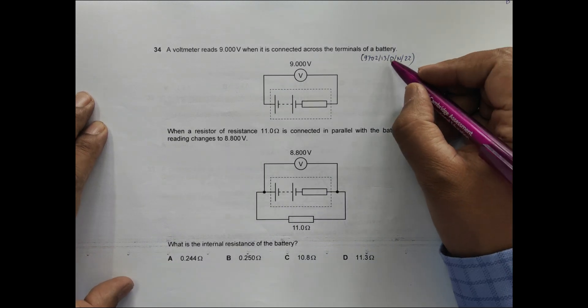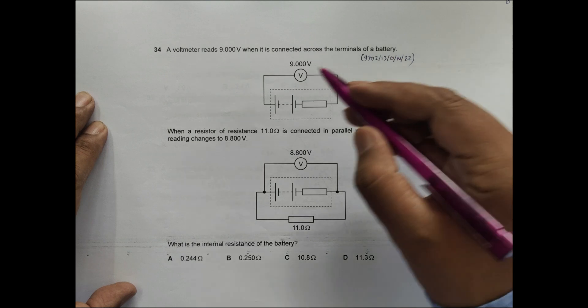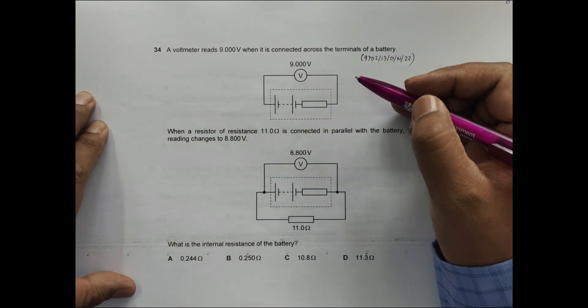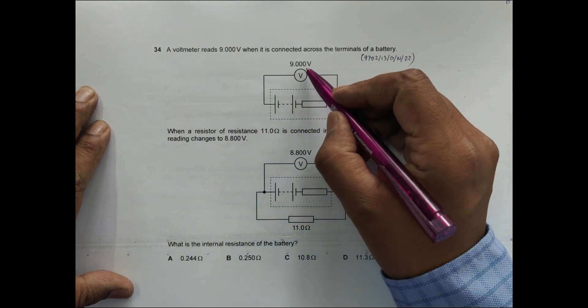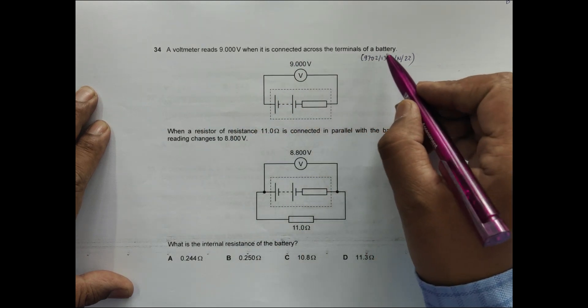Hello folks, this is 2022 October November paper 13, question number 34. It's concerned with the chapter current electricity. It says that a voltmeter reads 9.000 volt when it is connected across the terminals of a battery.